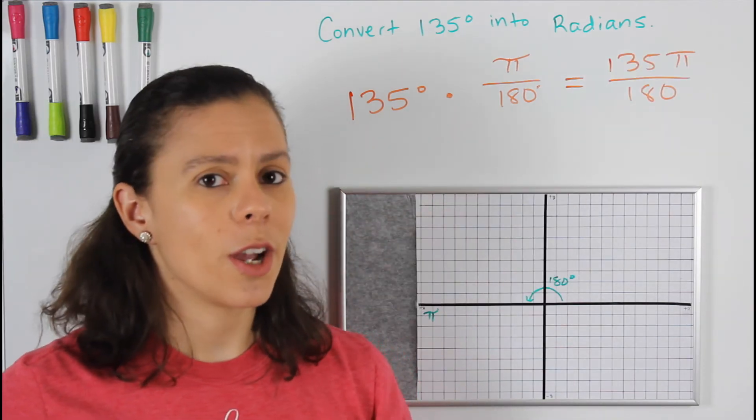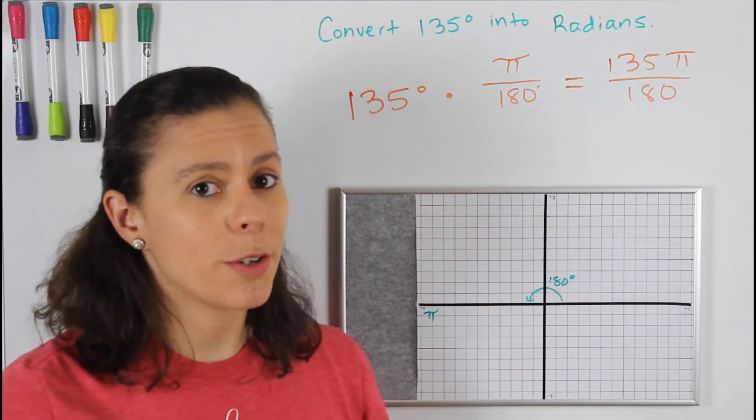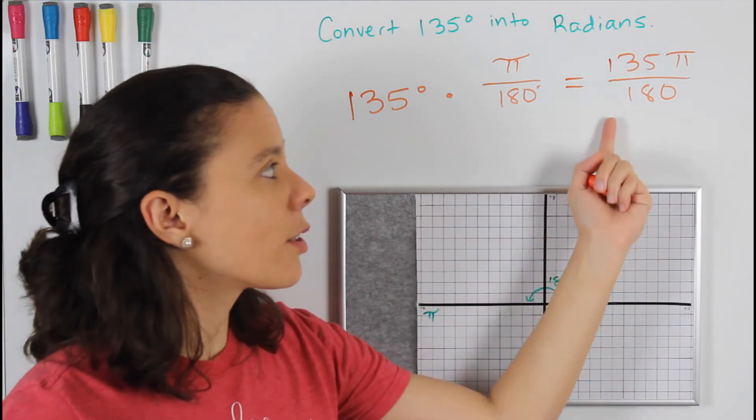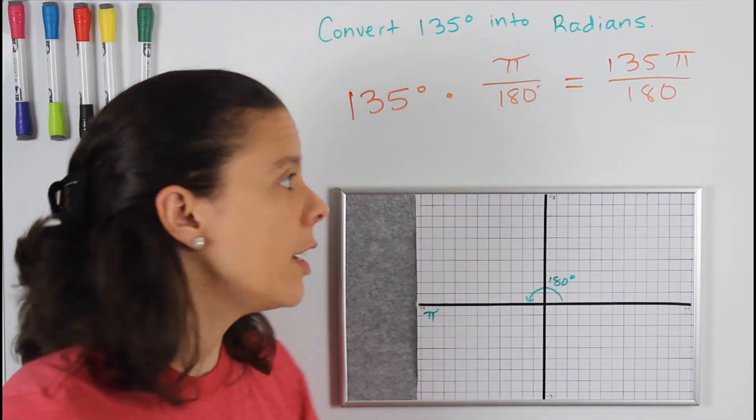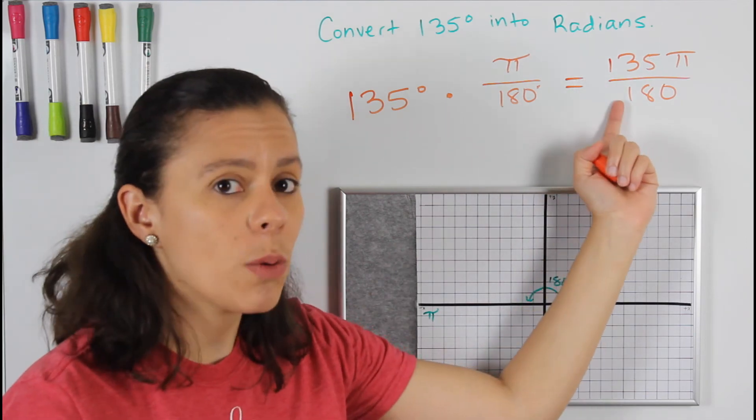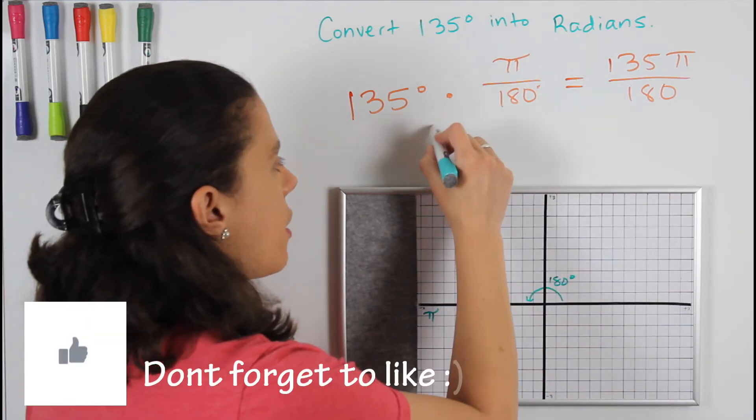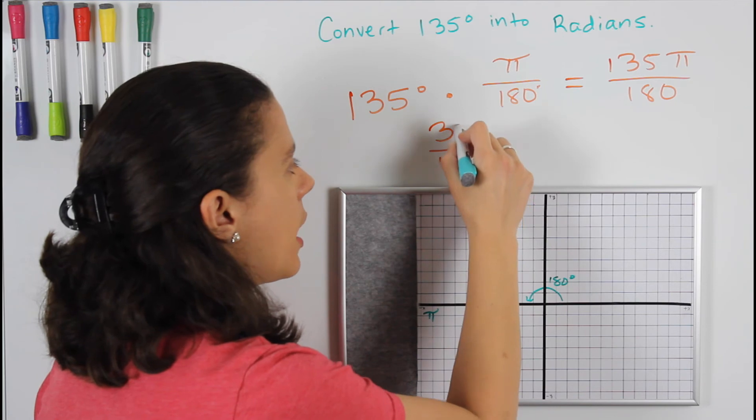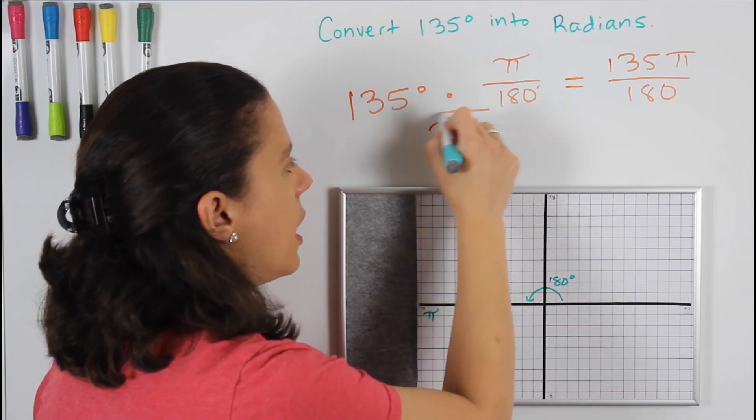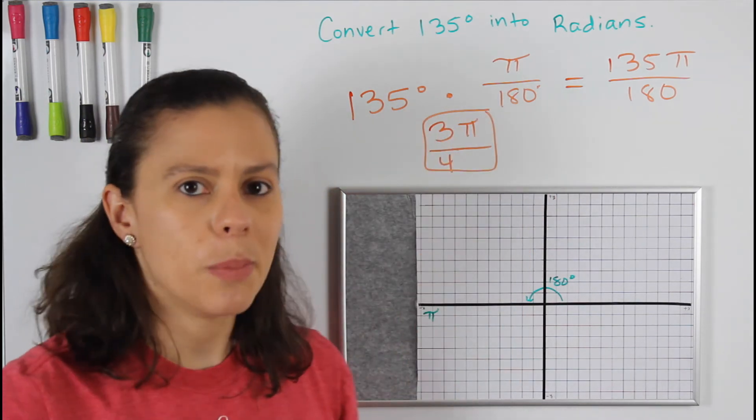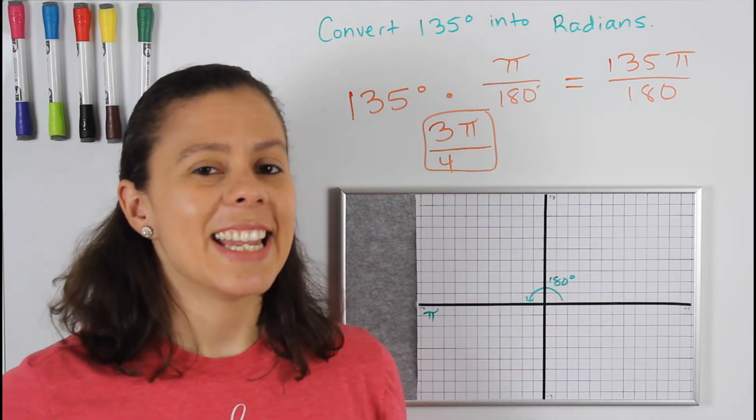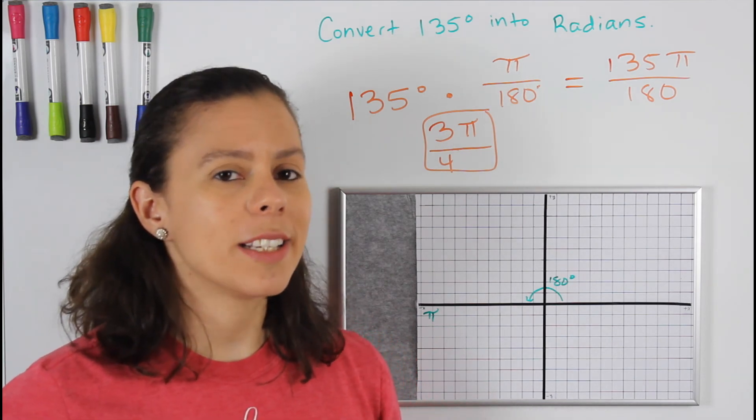If you saw my other short video on simplifying big fractions, you would know that their common factor is 45. So if I divide 135 and 180 by 45, I get 3 over 4, and we keep the pi. So this is 3 pi over 4, and that's it. That is how you convert degrees to radians.